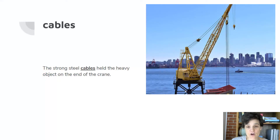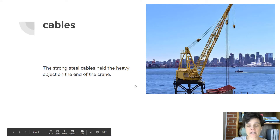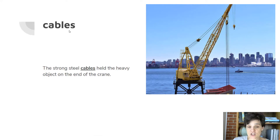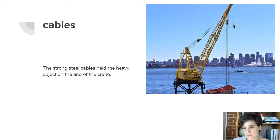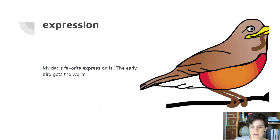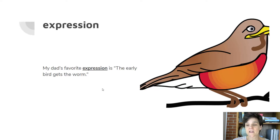Let's look at our slides. First we're going to look at some vocabulary. Cables: the strong steel cables held the heavy object on the end of the crane — these here would be cables, very strong types of rope. Expression: my dad's favorite expression is 'the early bird gets the worm.' So an expression is something that someone says; it can mean a lot of things.